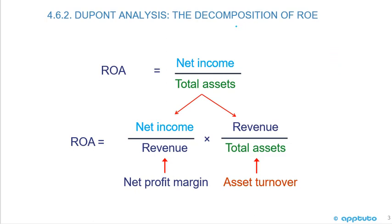The next step in the decomposition of ROE is to break down return on assets even further. ROE — net income over total assets — can also be expanded to equal net profit margin times asset turnover. Net profit margin is net income over revenue, times revenue over total assets for asset turnover. If we cancel out revenue, we're back to net income over total assets. So ROA can be expanded to net profit margin times asset turnover.